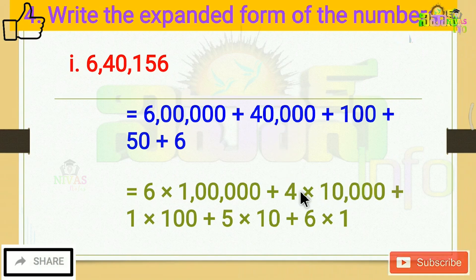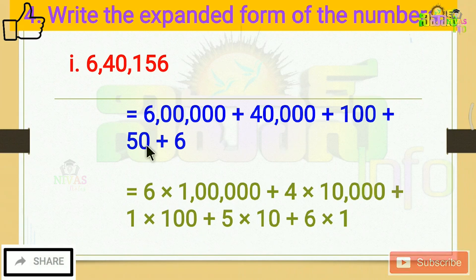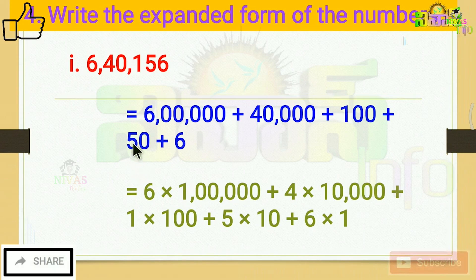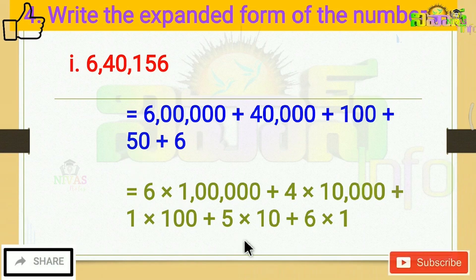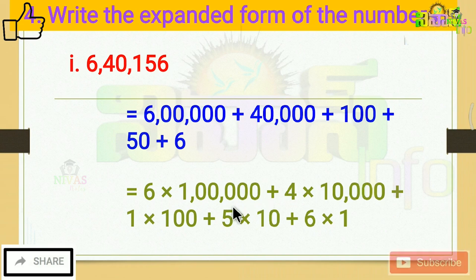Expanding further: 100 is 1 into 100. Then 50 is in the tens place — 5 into 10. And 6 is 6 into 1. This is how you expand the number.